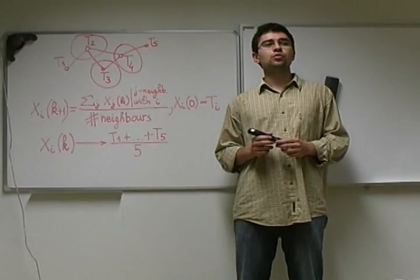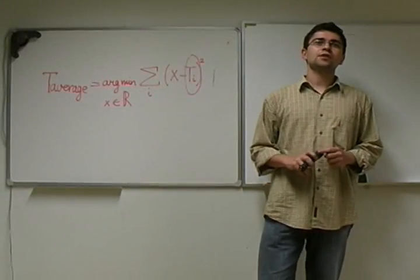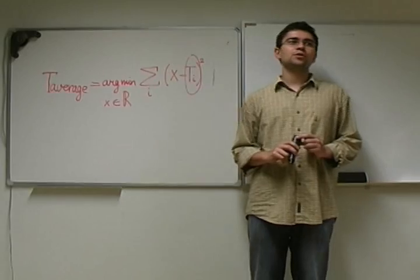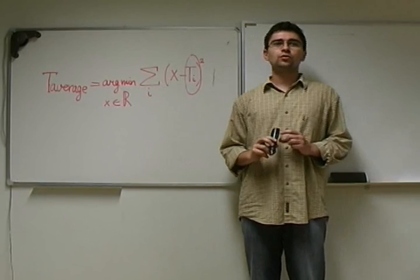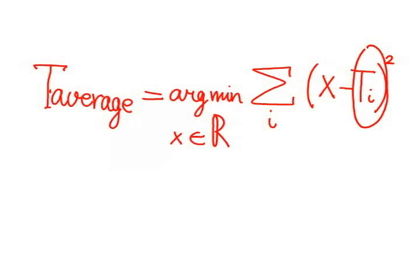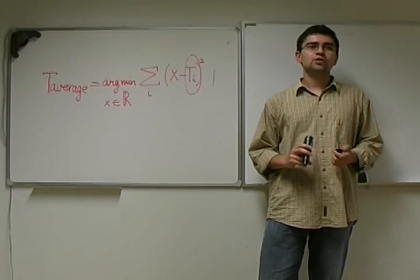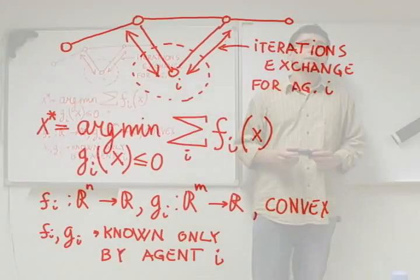It is a very interesting fact that the value of x_i converges to the average of all measurements as k goes to infinity. Convergence can be shown using system theory and algebraic graph theory. We can think of the consensus algorithm as a distributed algorithm for solving an optimization problem whose cost function is the sum of individual functions known only locally by individual sensors depending on their measurements.